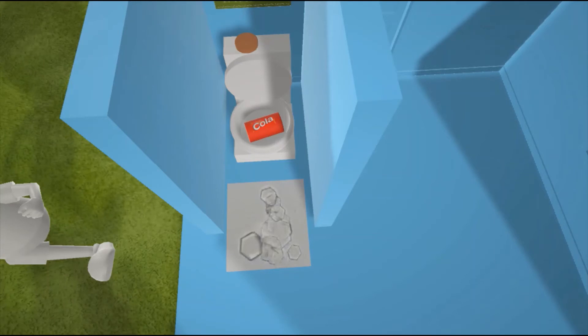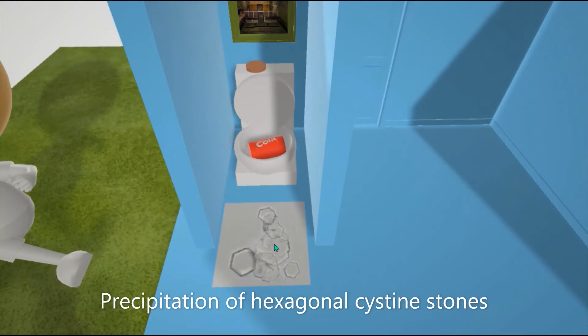Excess Cysteine in the urine can lead to recurrent precipitation of hexagonal cysteine stones. Thus, we see this picture here, this histologic picture of the hexagonal cysteine stones.